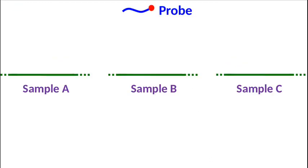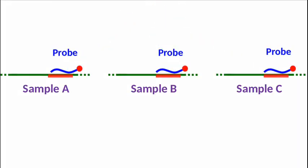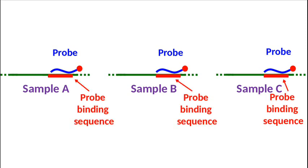Now, the probe is small and it binds to a small portion of the gene. Let's call this the probe binding sequence. The probe binding sequence is a sequence in the sample DNA which is complementary to the probe. And to keep things simple, we will indicate this in red.